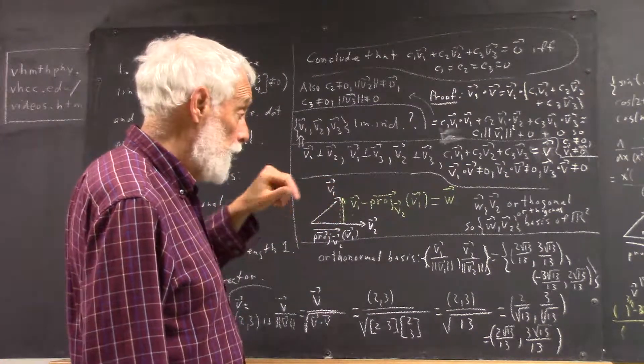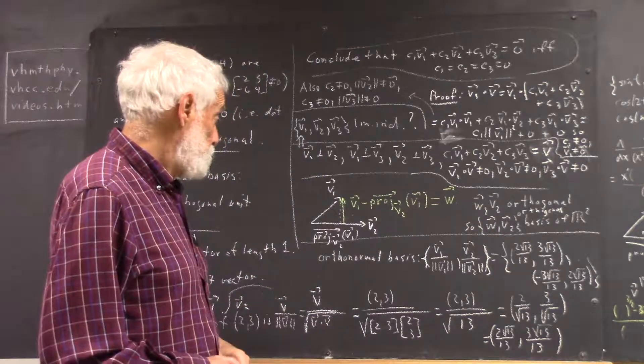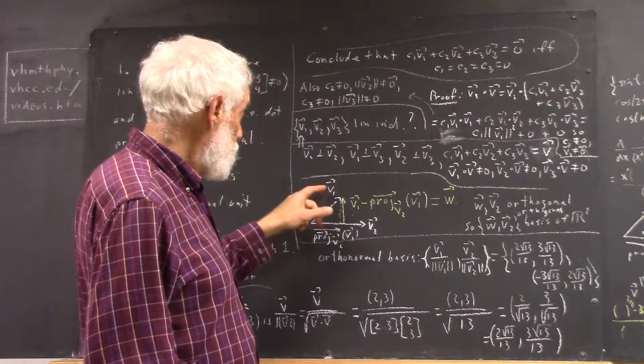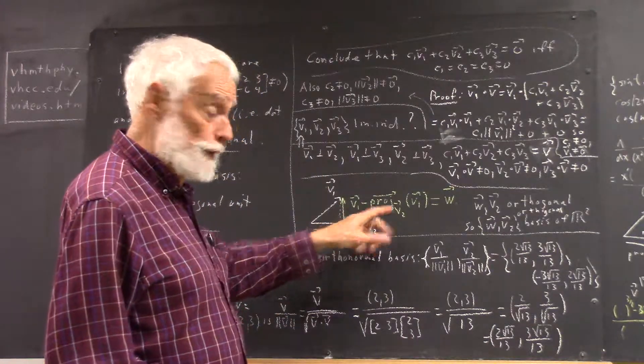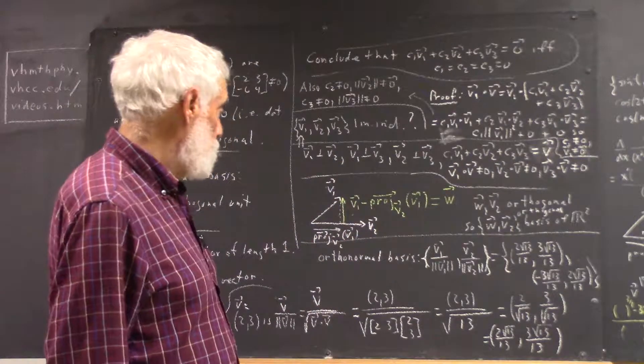Now, this vector and this vector add up to V1. So that this vector, it has to be V1 minus this vector, and you can draw that out as we have.